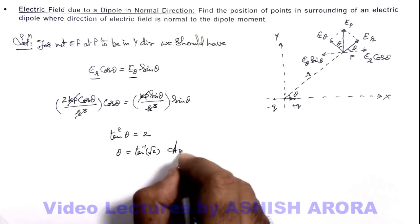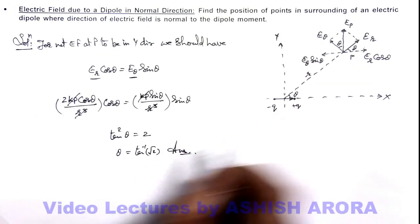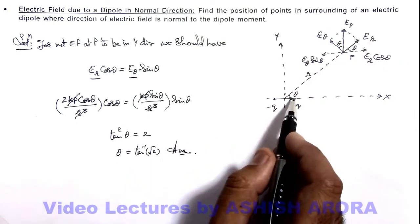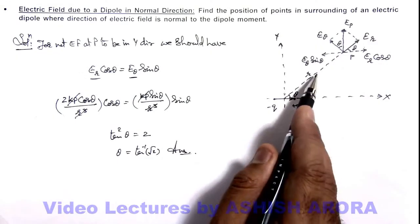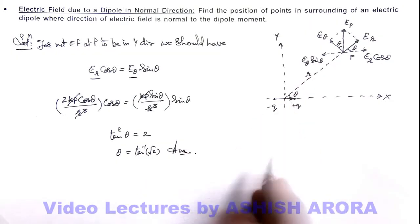We can write this would be the answer to this problem. Wherever the value of theta is tan inverse of root 2, at all points along this line, the net electric field will be in the direction normal to the dipole moment vector.